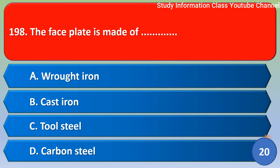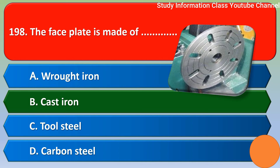Next question. The face blade is made of: Option A, wrought iron; Option B, cast iron; Option C, tool steel; Option D, carbon steel. The correct answer is Option B, cast iron.